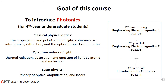This course will introduce classical physics of photonics, where we can learn how light is propagated, polarized, and how it interacts with each other or with other materials. Some topics will be selected in laser physics to see how light is generated, and quantum optics for small-scale optical phenomena. This lecture is open to all fourth-year undergraduate students, but it would be very helpful if you already took the course of engineering electromagnetics before.